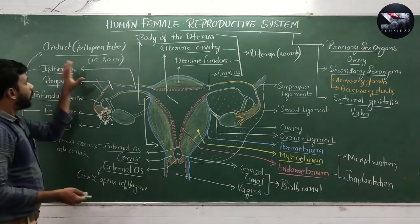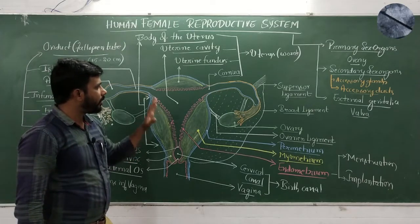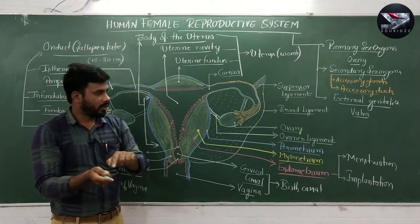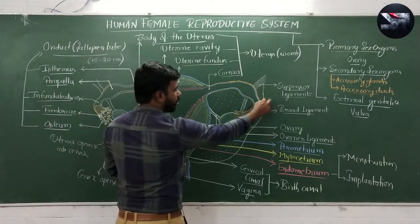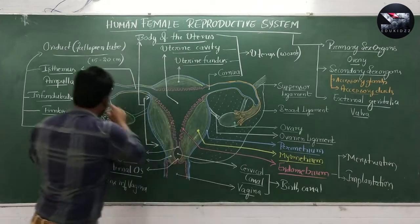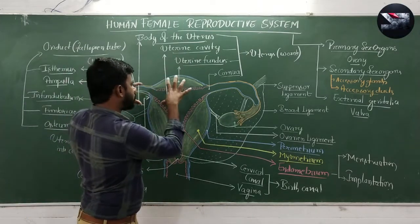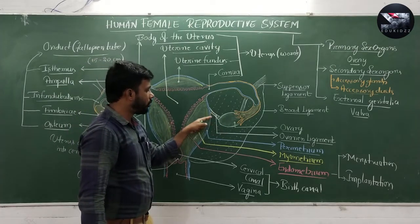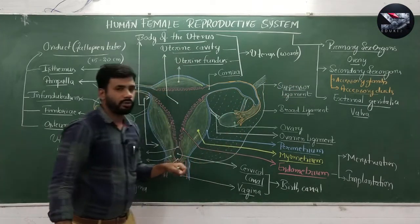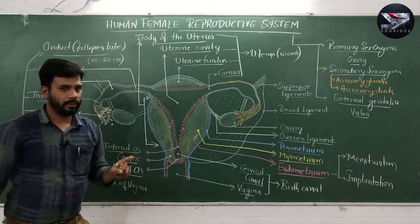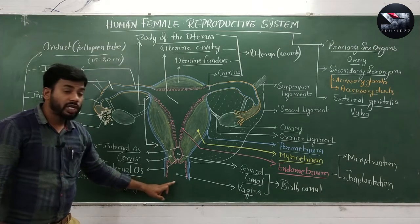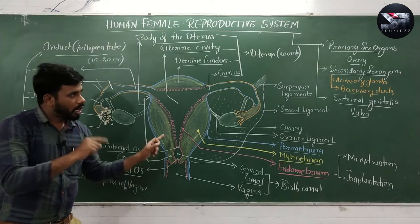The uterus generally lies between the urinary bladder and the rectum, held in place with the help of ligaments. It is supported by the broad ligament. Finally, the vagina opens into the vaginal orifice, which is partially covered by a layer called the hymen — about that we will discuss in the next class.